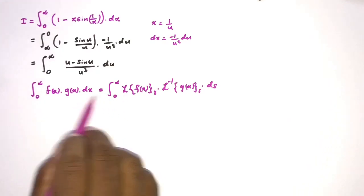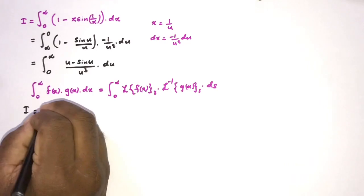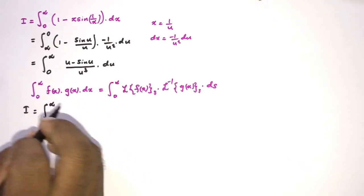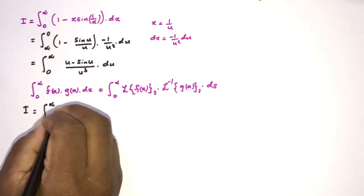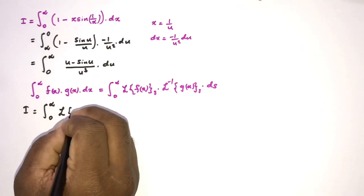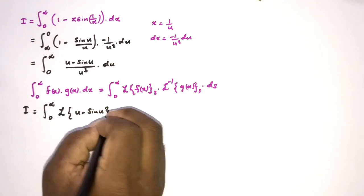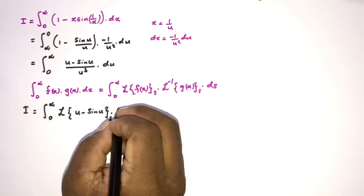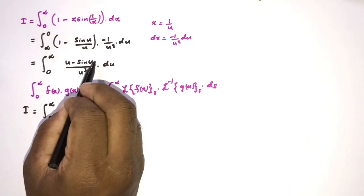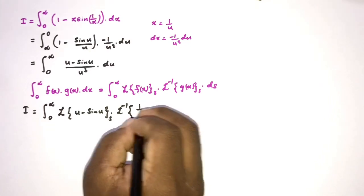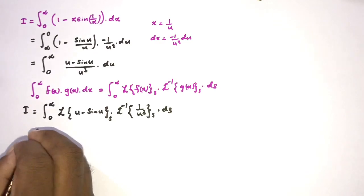Applying this identity to our integral: we take f as (u minus sine of u) and g as 1 over u cubed. So I equals the integral from 0 to infinity of the Laplace transform of (u minus sine of u) times the inverse Laplace transform of 1 over u cubed, ds.